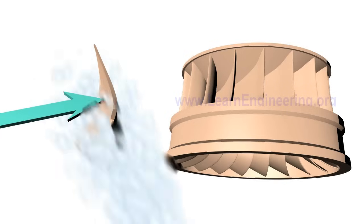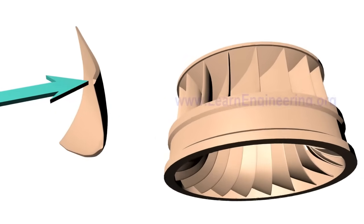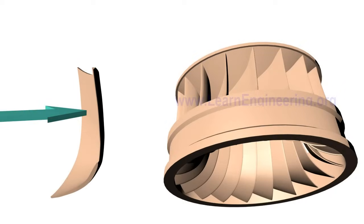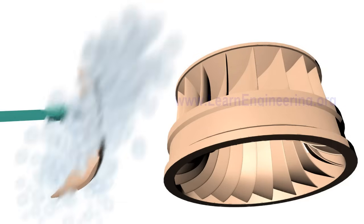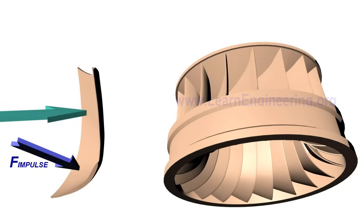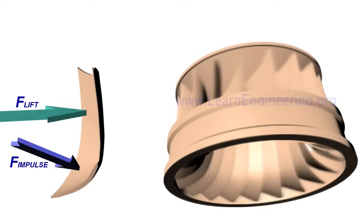You can also note one more peculiar thing about the blade. It has a bucket kind of shape towards the outlet. So water will hit and produce an impulse force before leaving the runner. Both impulse force and lift force will make the runner rotate. So Francis Turbine is not a pure reaction turbine. A portion of force comes from impulse action also.